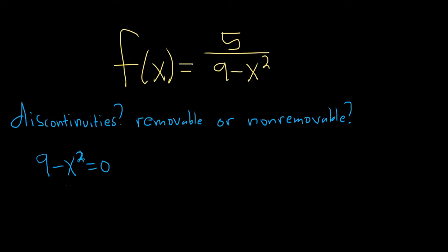And then you set the bottom equal to 0. So this is x squared equals 9 by adding x squared over this way, and then taking the square root gives us plus or minus 3.